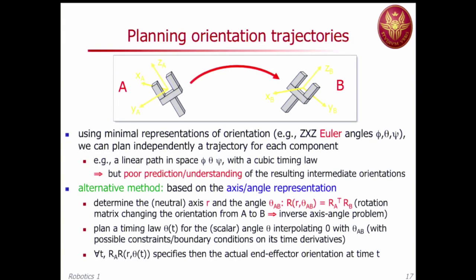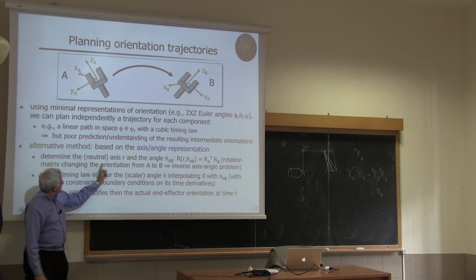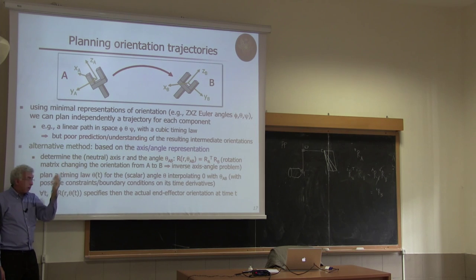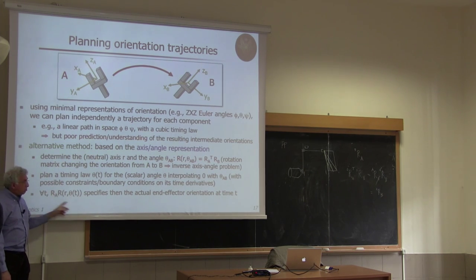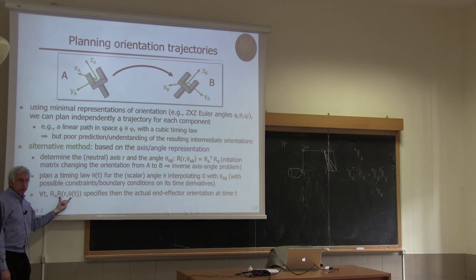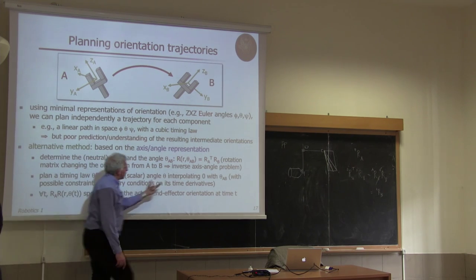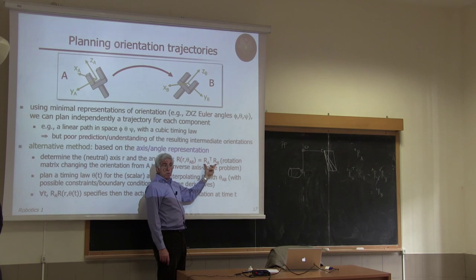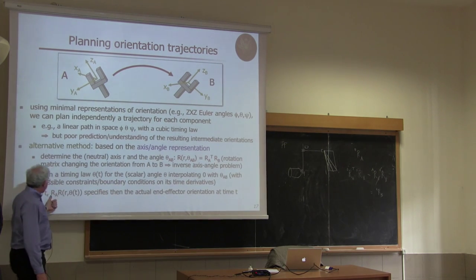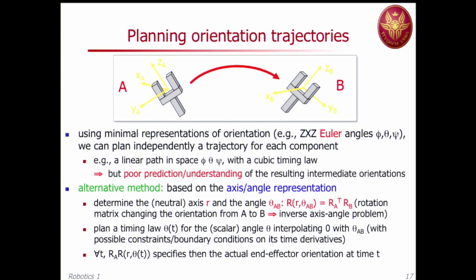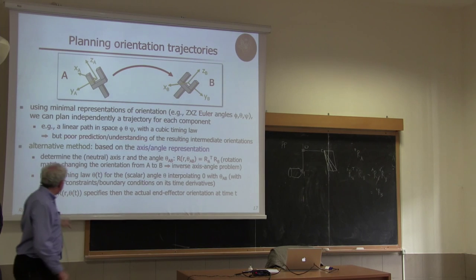Once you have computed the axis and the timing law for theta(t), the actual orientation during motion is R(t) = RA · R(R_hat, theta(t)). At the end, when theta = theta_AB, the product R(R_hat, theta_AB) = R_AB = RA^T · RB, so R(t_final) = RA · RA^T · RB = RB, as desired. Don't forget to combine the relative rotation with the initial orientation RA.